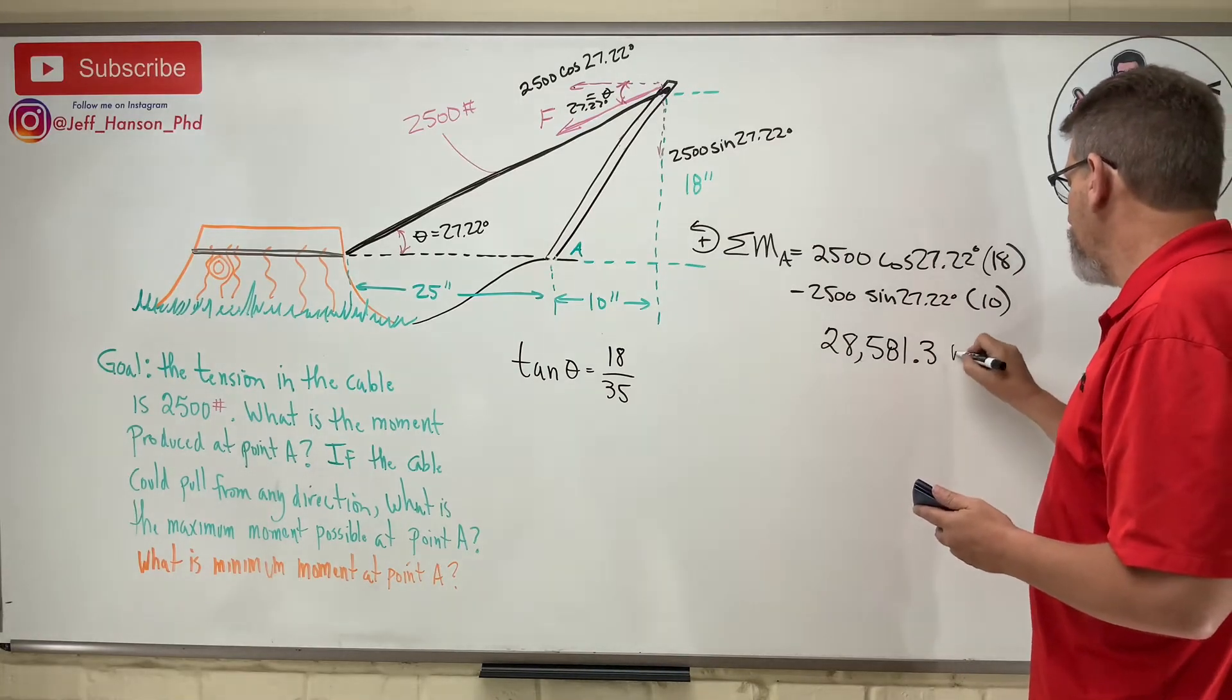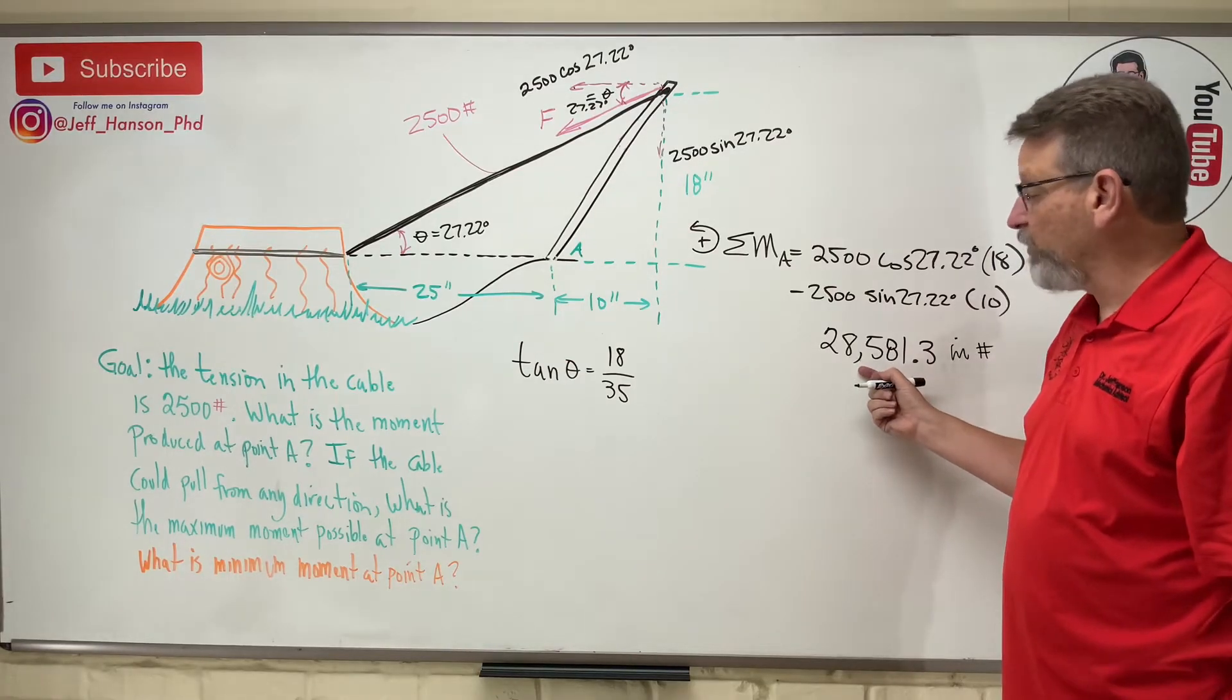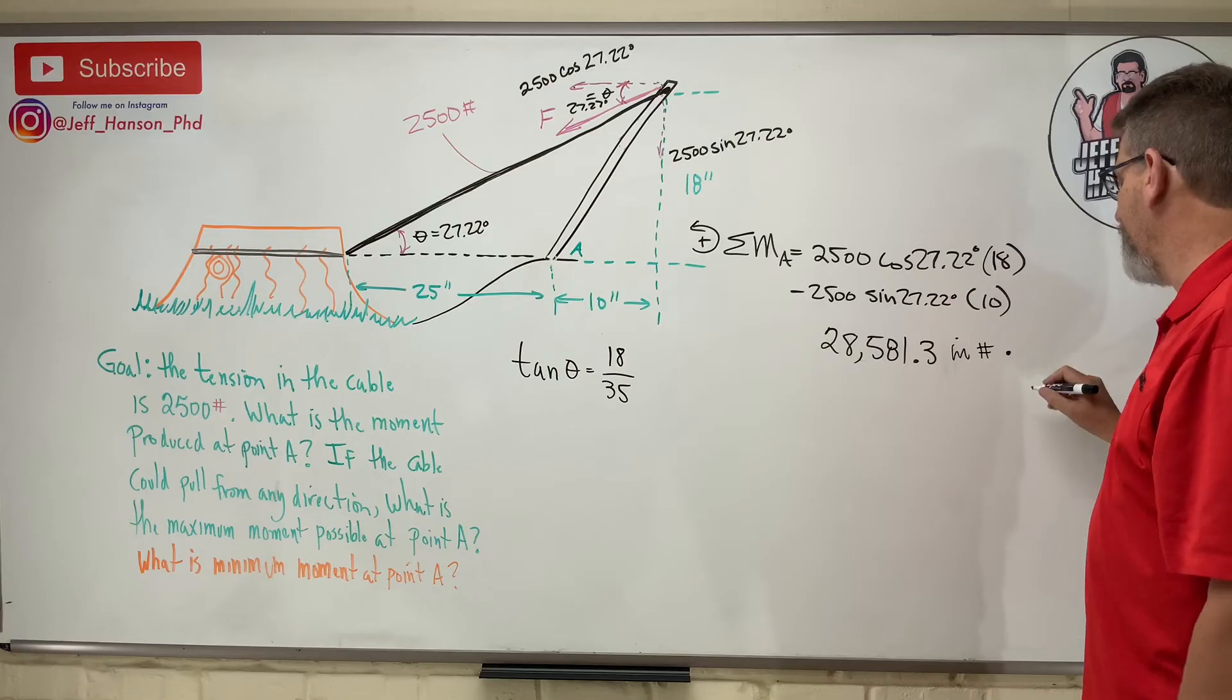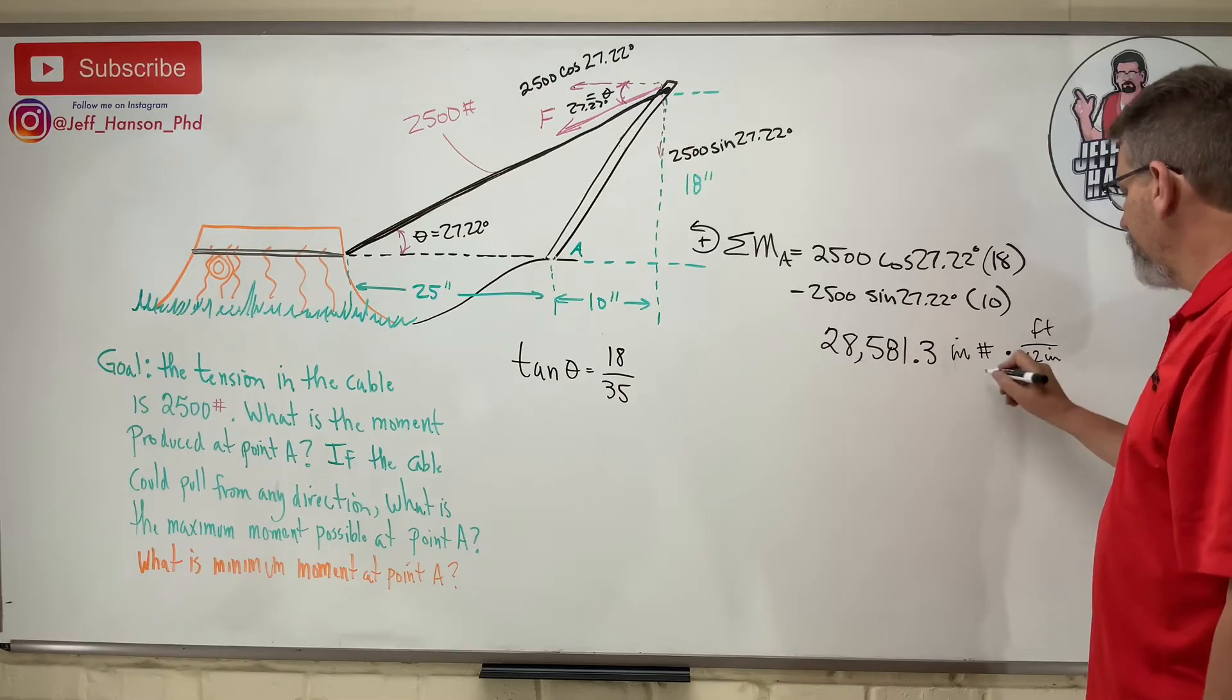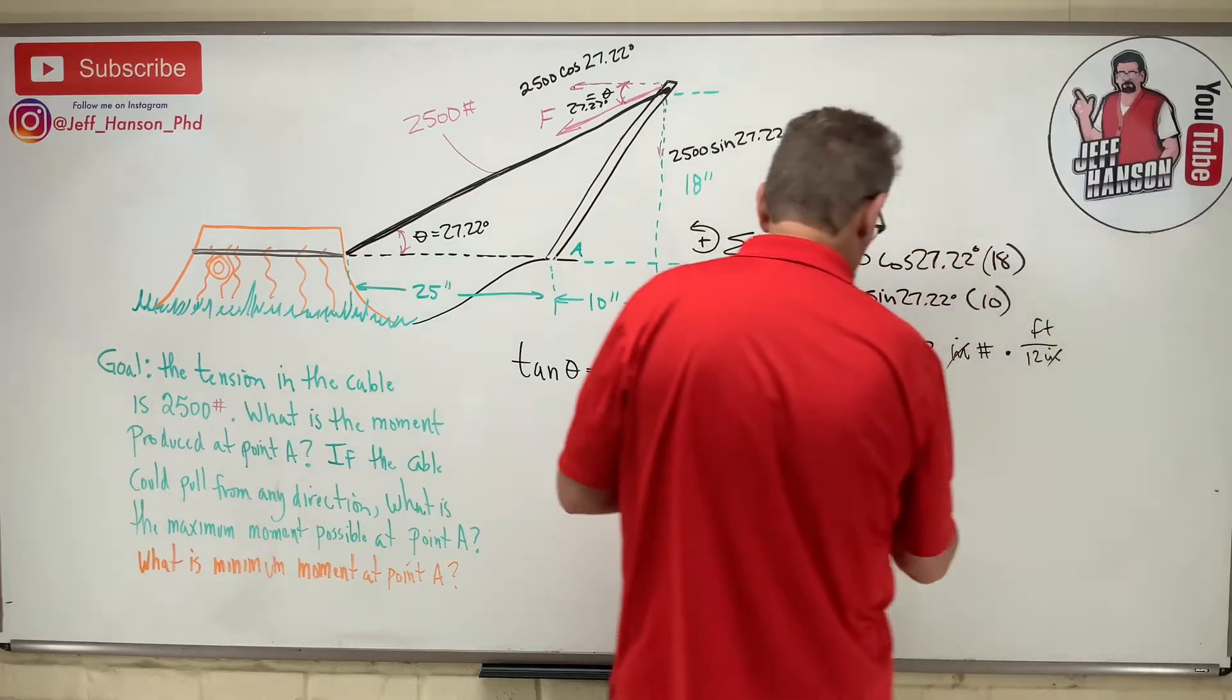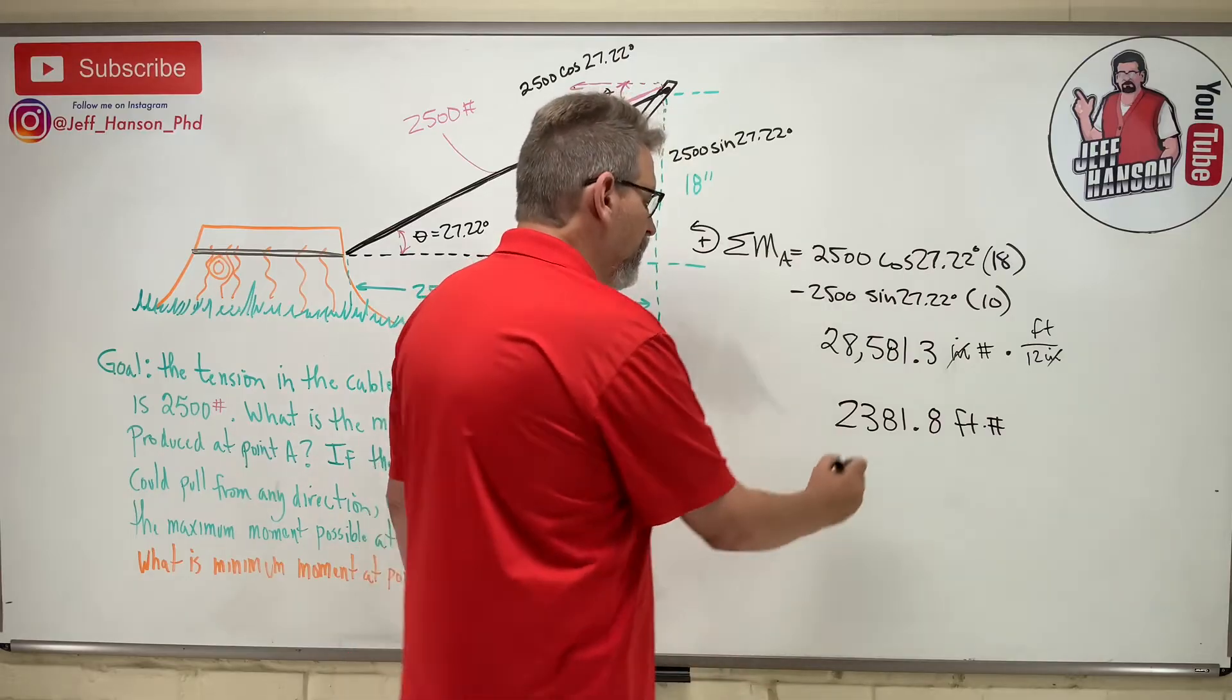Now it's a big number and probably that's not a really great way to enter that because this number is so big. So probably a better way to do that would have been converted into foot-pounds instead of inches. Could we do that? Well sure we could. Take this and we can multiply it by, let's see, there are 12 inches per foot, right? And that way my inches divide away. So take that number divided by 12 is equal to 2381.8 foot-pounds.